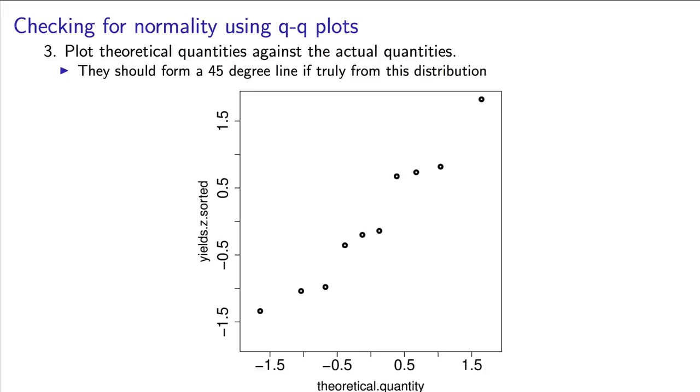We should have the numbers lying mostly around a 45-degree diagonal line. And in this example, they seem to be so. The horizontal axis is the theoretical z-value, and the vertical axis is the calculated z-value.